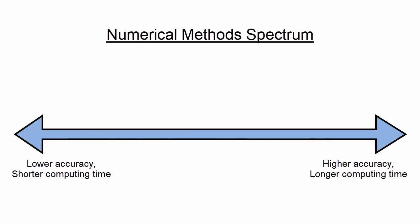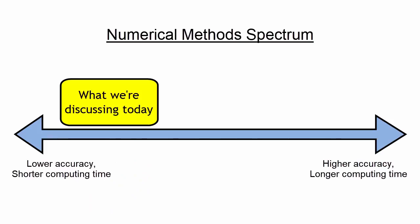But in this particular video, I want to talk about one particular way that we can obtain numerical solutions to mathematical problems. This method falls more towards the quick side of the numerical methods spectrum. It's rather quick. However, it's actually a lot less accurate than many other different ways of obtaining numerical solutions. And it involves generating random numbers and a bit of probability.